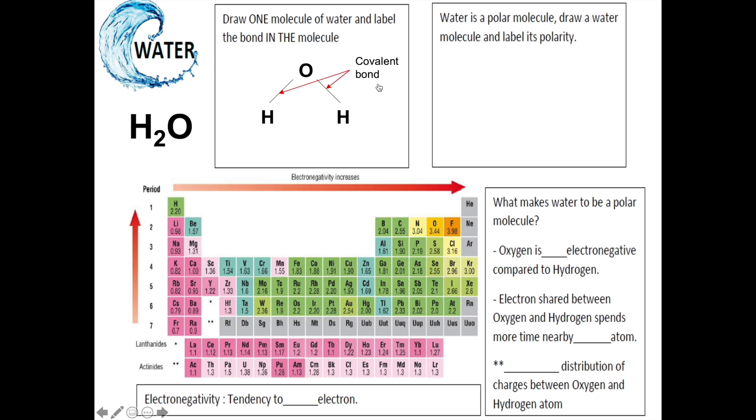Since covalent bond is a physical bond, it is drawn with solid lines. Now, in the next box, it is stated that water is a polar molecule. Or, if we translate it in bahasa, it means air adalah molecule berkutub.